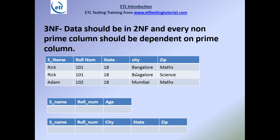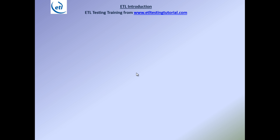That's all about normalization — it is just the organization of your data achieved by following certain normal forms: first, second, third, BCNF, and more. The core concept is: data should be discrete, no duplicates, and all other columns in a table should be dependent on the primary key. Now we'll go to denormalization, which is the most important concept used in ETL.